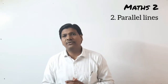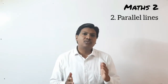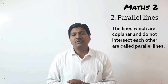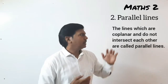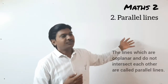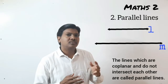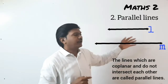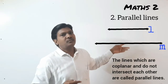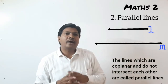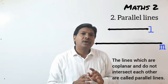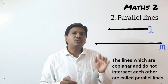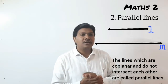So students, do you know what are parallel lines? The lines which are co-planar and do not intersect each other are called parallel lines. In this diagram, the two lines shown are co-planar, meaning they are in one plane and do not intersect each other, so these two lines are parallel lines. In a plane, lines are co-planar but do not intersect each other.